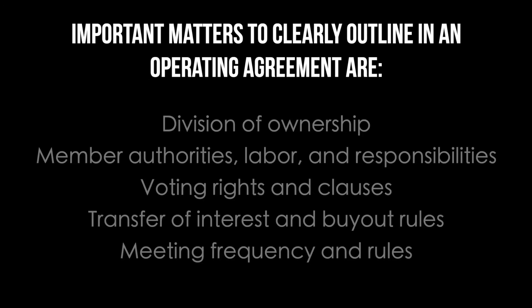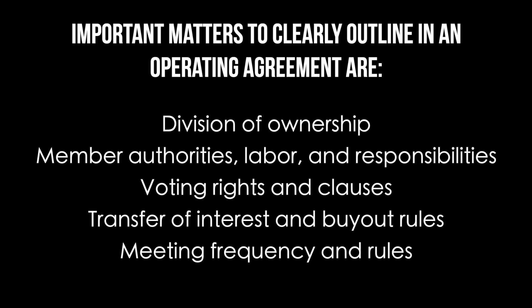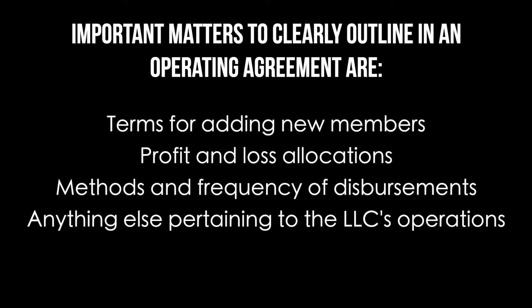What to include in an operating agreement? Operating agreements are sometimes 20 pages long, and you will want to make sure that every matter concerning your business's finances and operations are written out and regulated. Important matters to clearly outline include: division of ownership, member authorities, labor and responsibilities, voting rights and clauses, transfer of interest and buyout rules, meeting frequency and rules, terms for adding new members, profit and loss allocations, methods and frequency of disbursements, and anything else pertaining to the LLC's operations.